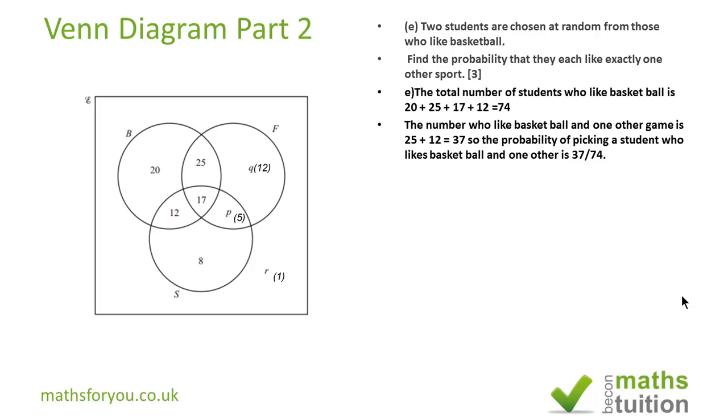So the probability is 37 over 74. Now having been chosen, he no longer appears in the mix because he's now gone. So now we have the number of students who play basketball is now 73. And the number of students who play basketball and one other sport is now 36.